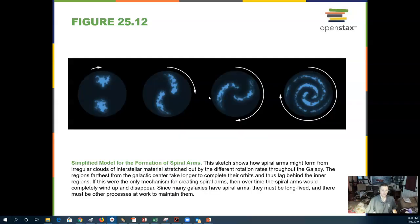A simplified form of the spiral arms shows two globs of gas and dust starting to rotate, and they form these spiral arms. This is a simplified version.